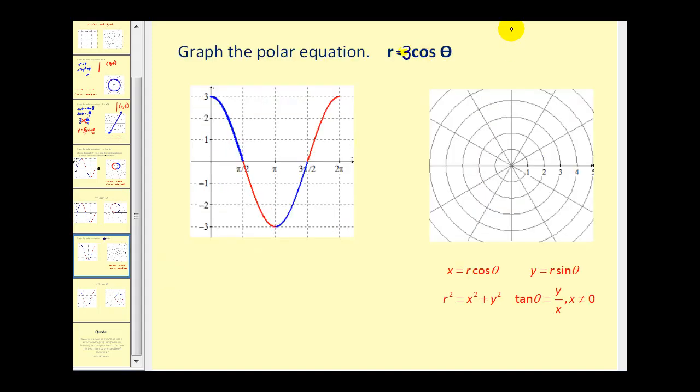Let's go ahead and take a look at another one. Let's graph r equals three cosine theta. Again, we'll use this graph as a reference, where our y-axis is now going to be r, and the x-axis will be theta. And what we'll notice is that when theta is equal to zero degrees, the r value is three. So the point would actually be right here.